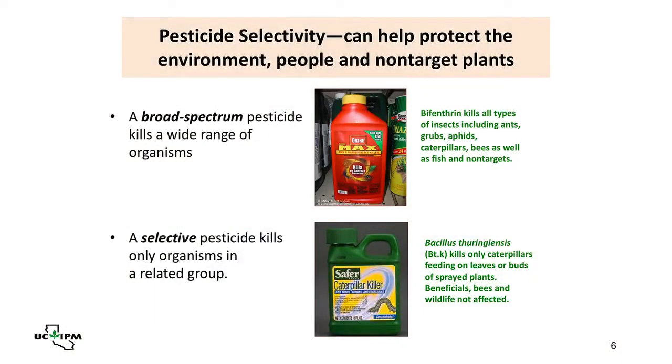We try to avoid using broad spectrum pesticides when possible. The ideal pesticide in an integrated pest management program is a selective insecticide, because it only kills organisms in a specific group. Bacillus thuringiensis kurstaki (Bt) only kills caterpillars that feed on treated leaves. As a result, it won't impact beneficials, bees, your dog, your child, or fish — it's a very benign and selective product. Of course, if your problem is termites or earwigs, Bt won't be effective.